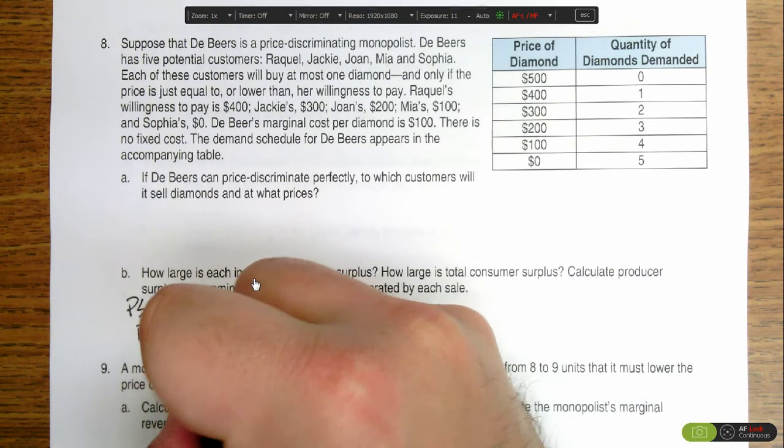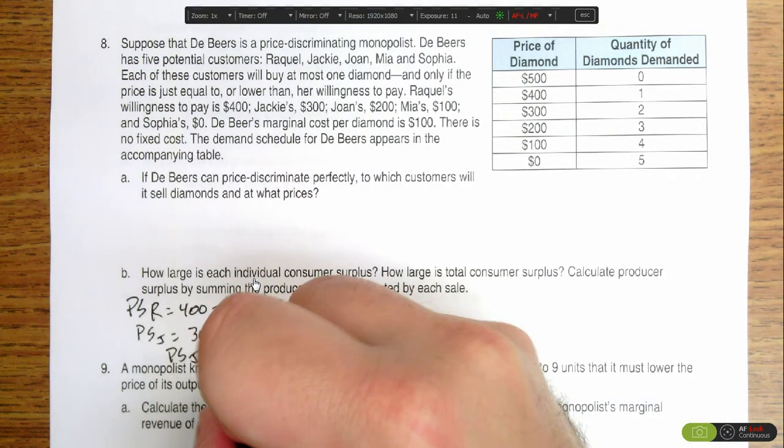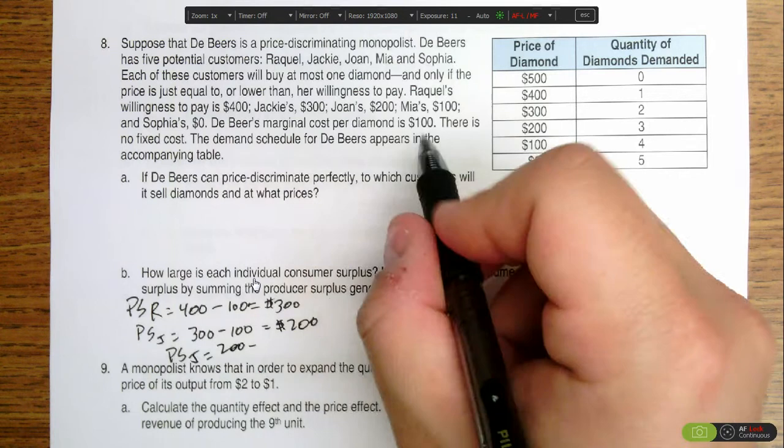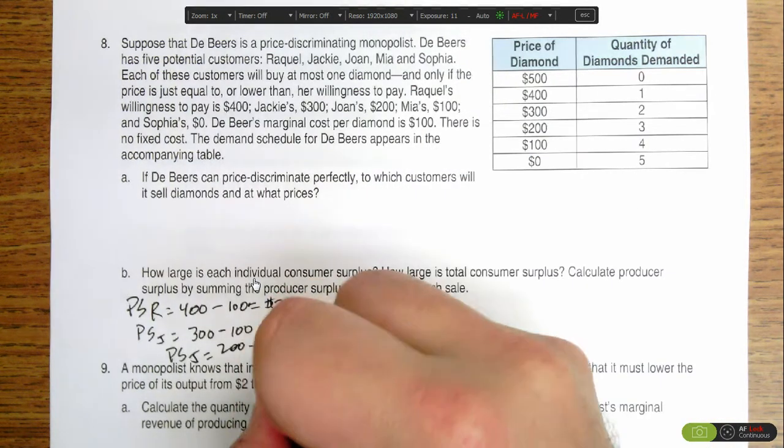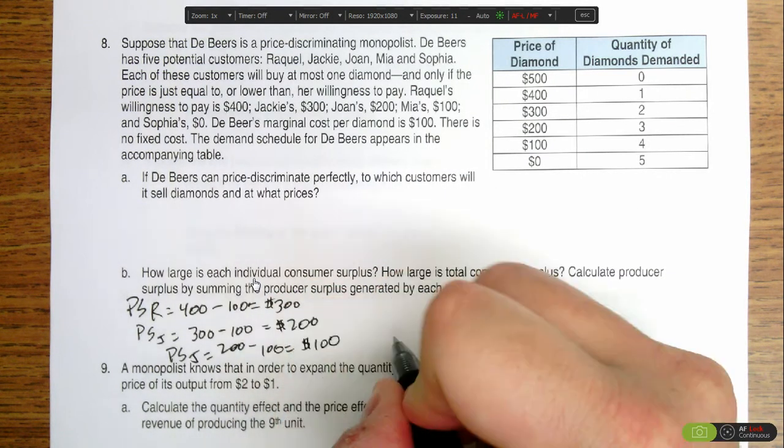Producer surplus for Joan, she's willing to pay $200 and that's what she pays. It costs $100 to produce the diamond, so there's $100 in producer surplus.